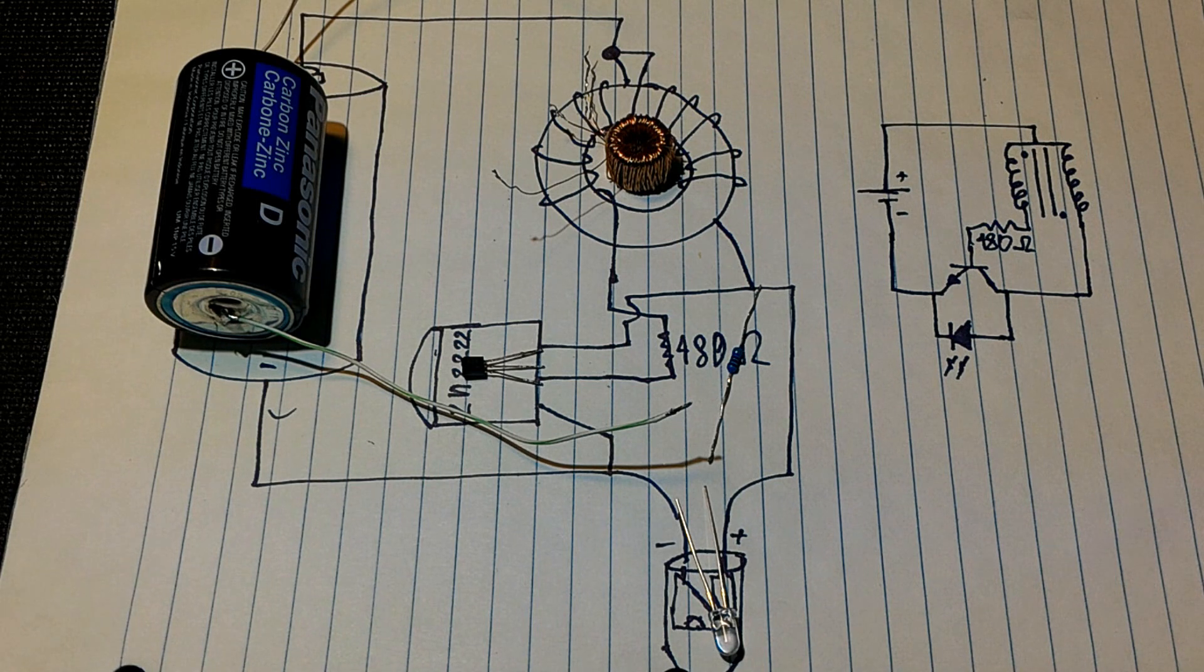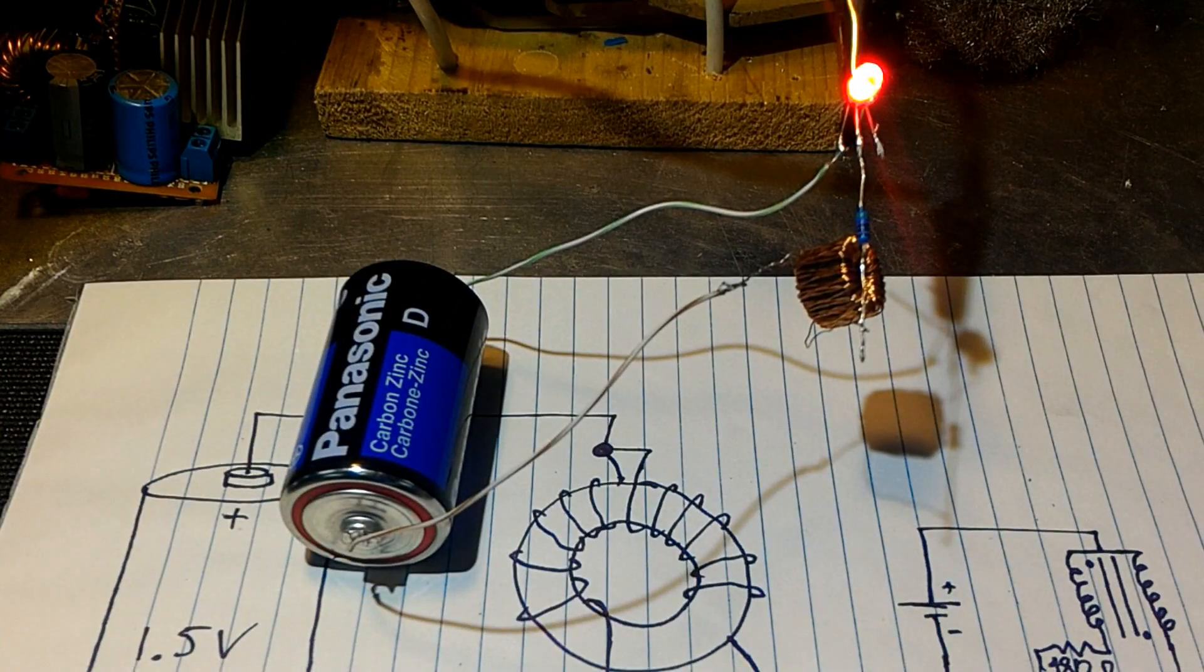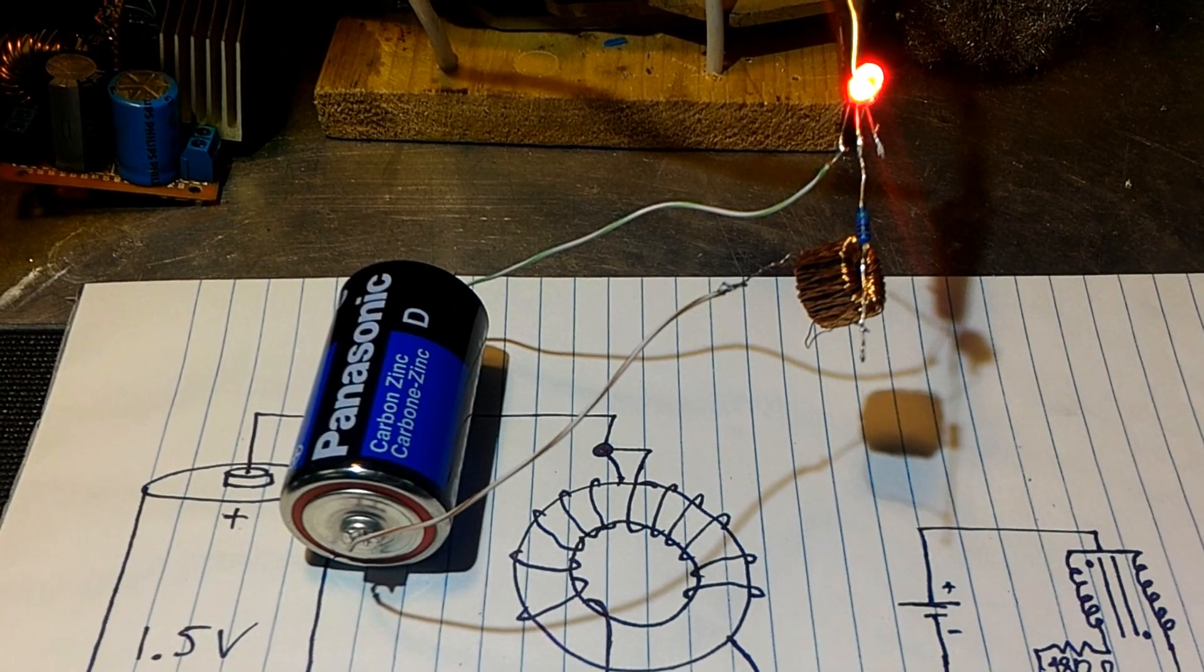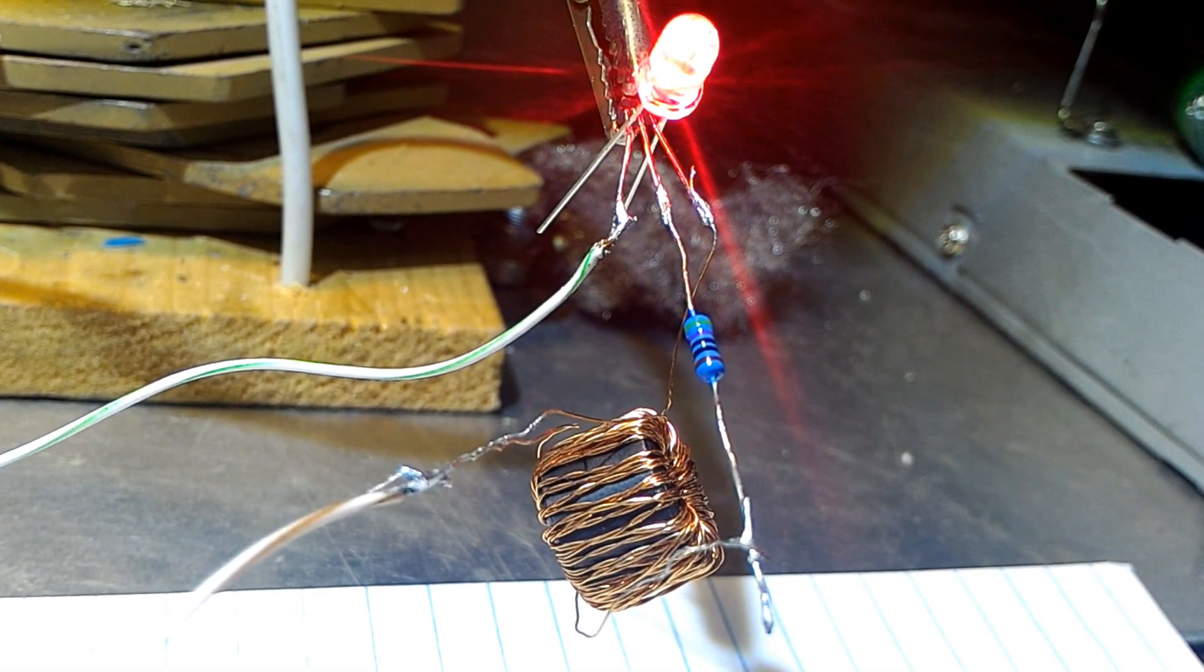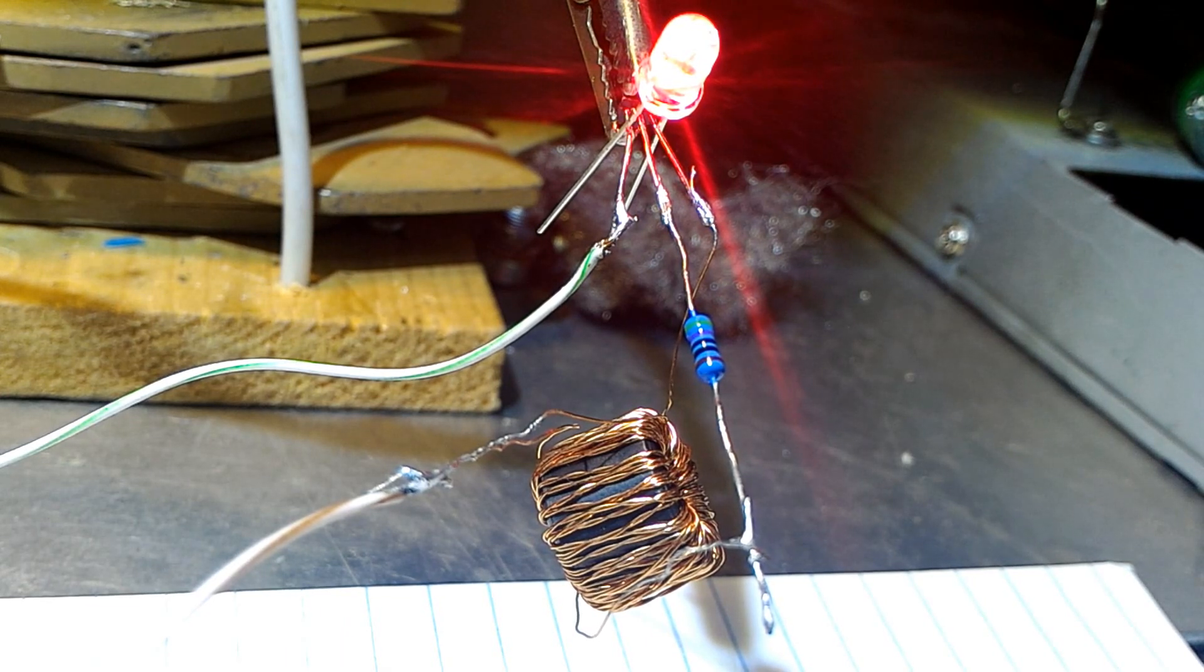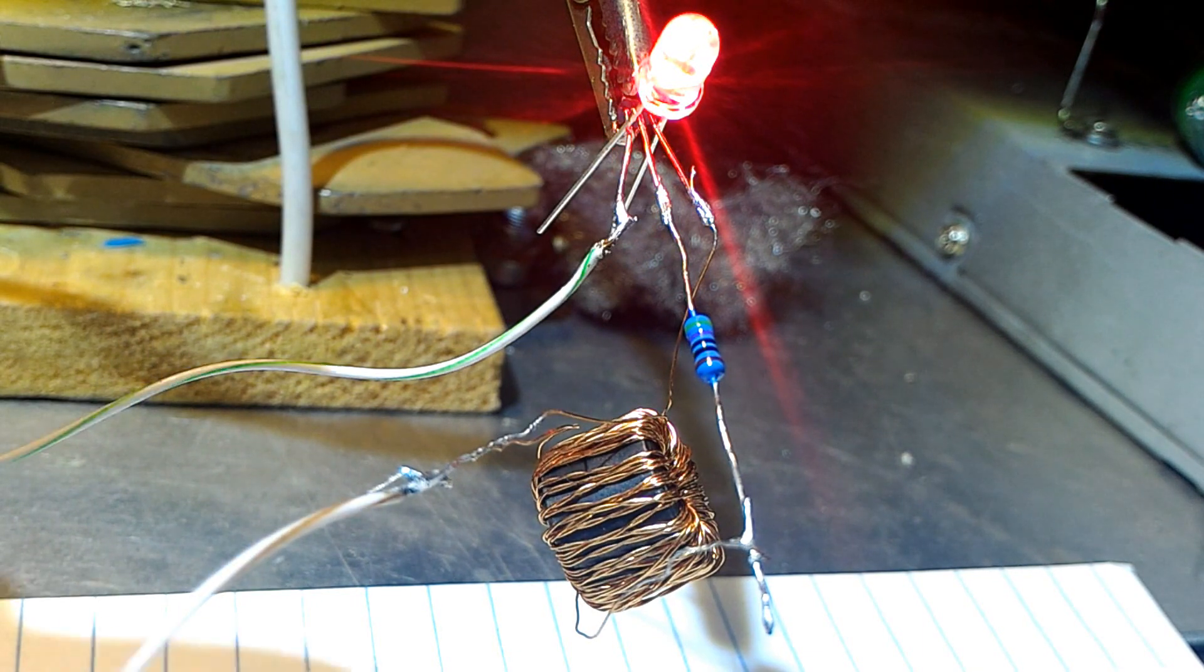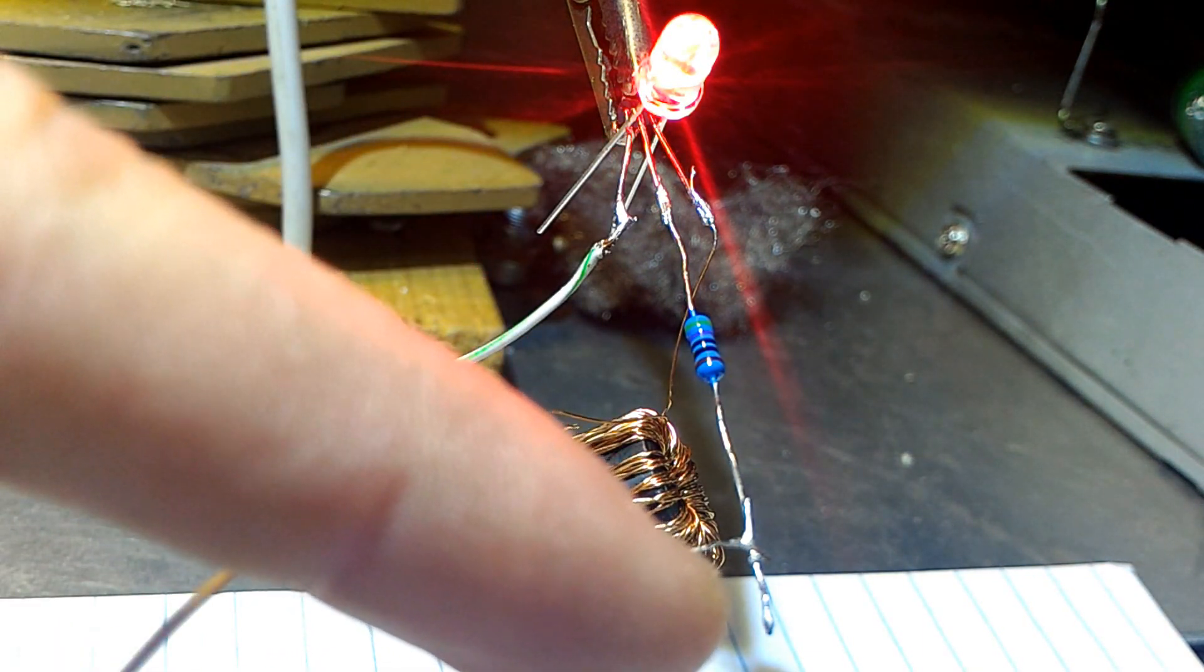So I will just put it all together. And yeah. We have our circuit working and I will show it to you up close. So as you can see here, we have our resistor connected directly to the base. And one of our coils goes directly to our resistor.